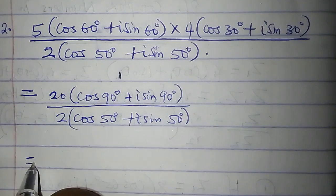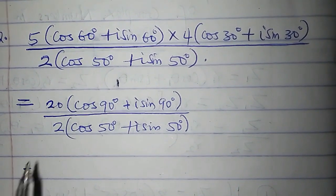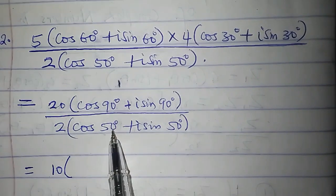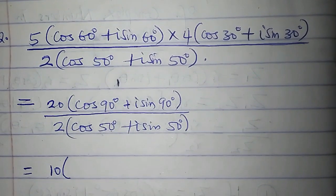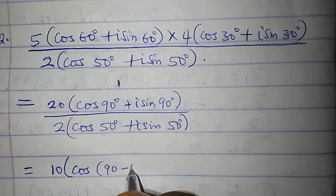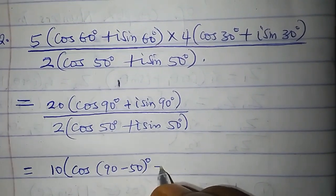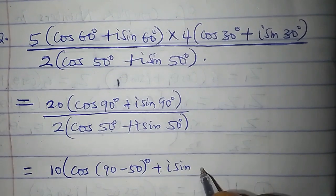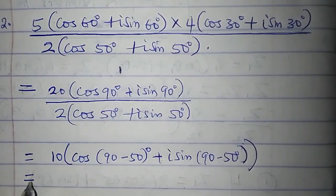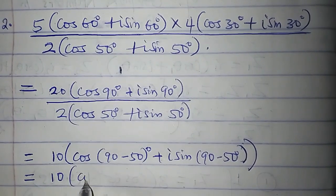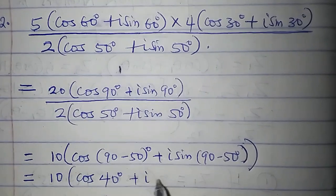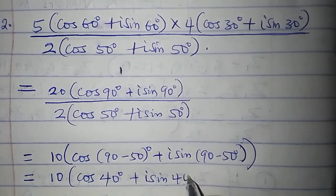We will now apply the division principle: 20 divided by 2 is 10. Then I subtract the second argument from the first: cos(90 − 50)° + i sin(90 − 50)°. So we have 10 times cos 40° + i sin 40°.